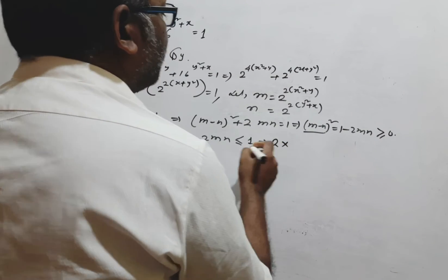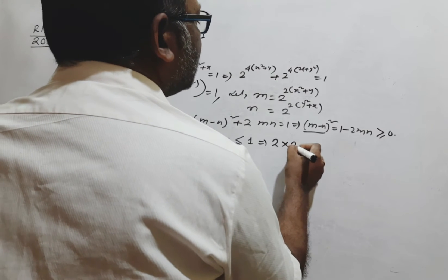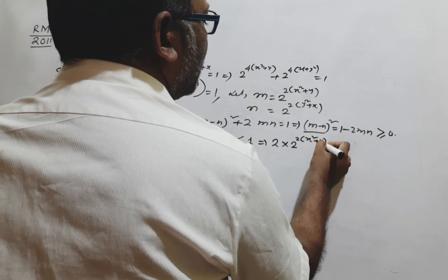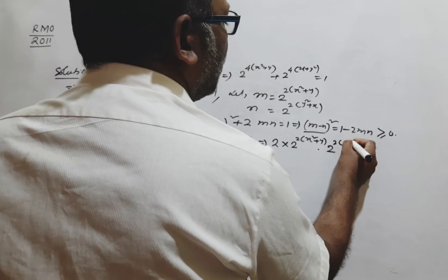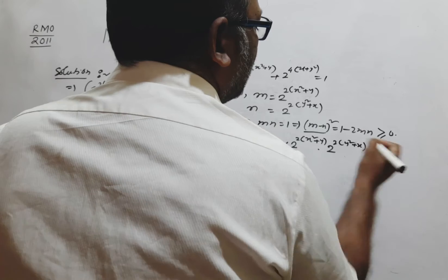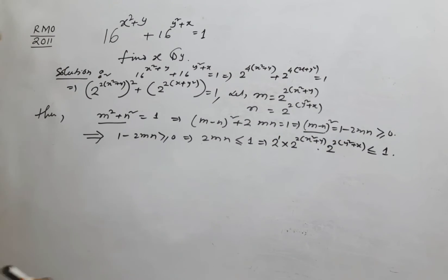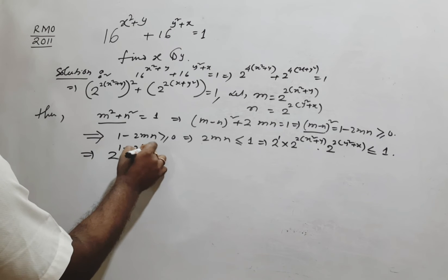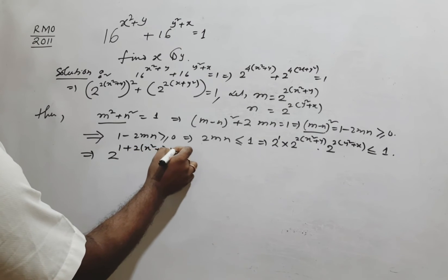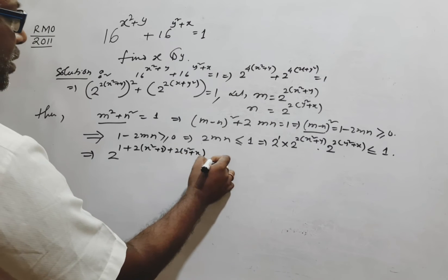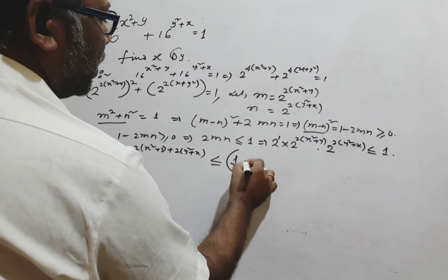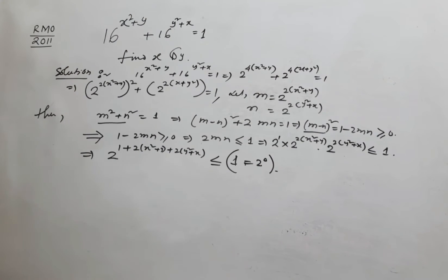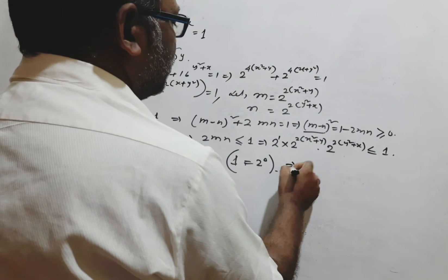Now, 2mn equals 2 to the power 2(x² + y) times 2 to the power 2(y² + x), which equals 2 to the power 2(x² + y² + x + y). For 2mn ≤ 1, and since the minimum of 2mn with mn > 0 is approached as the exponent goes to zero, we compare with 2 to the power 0, implying the exponent equals 0.